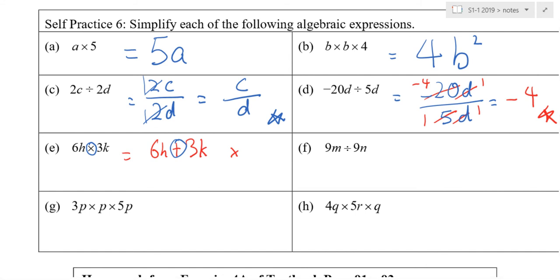So, what is 6 times 3? 18. So, answer is 18. What is H times K? HK. Just like that. Simple. So, there's nothing you can do. Just number times number, alphabet times alphabet. Next one.